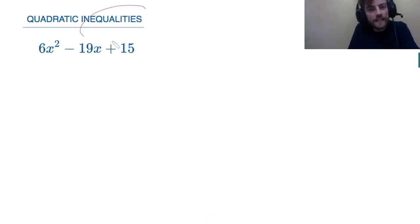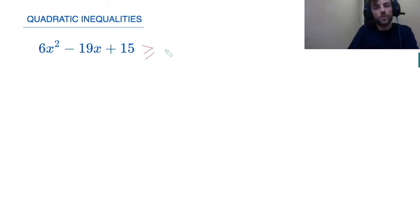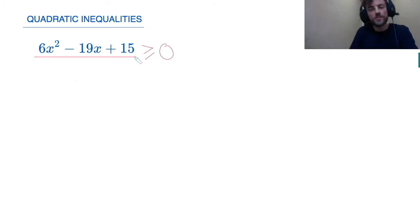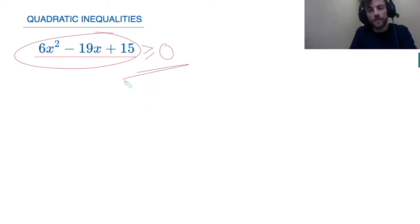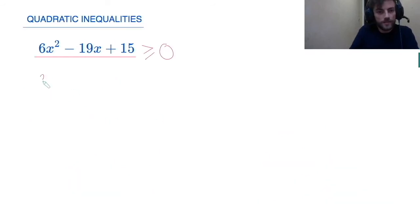Now that leads us on to quadratic inequalities. The difference between an inequality and an equation is that in an equation it was equal to something, whereas in an inequality it will be greater than or less than some number — in this case zero. The goal of a quadratic inequality is to sketch the graph, and from the graph identify where it is bigger than or equal to zero. To sketch the graph, we use the factorized form: (3x minus 5)(2x minus 3), which gives us our roots — the x-axis intercepts.